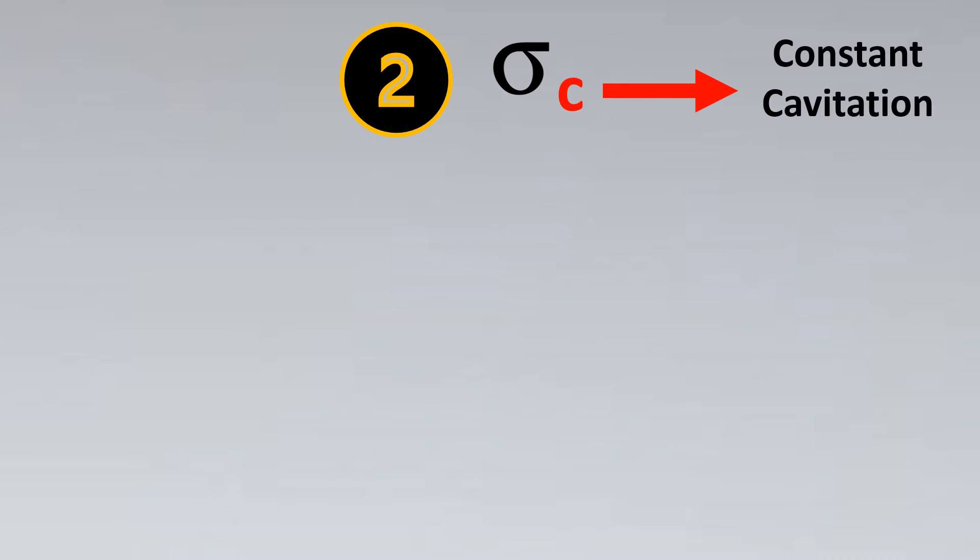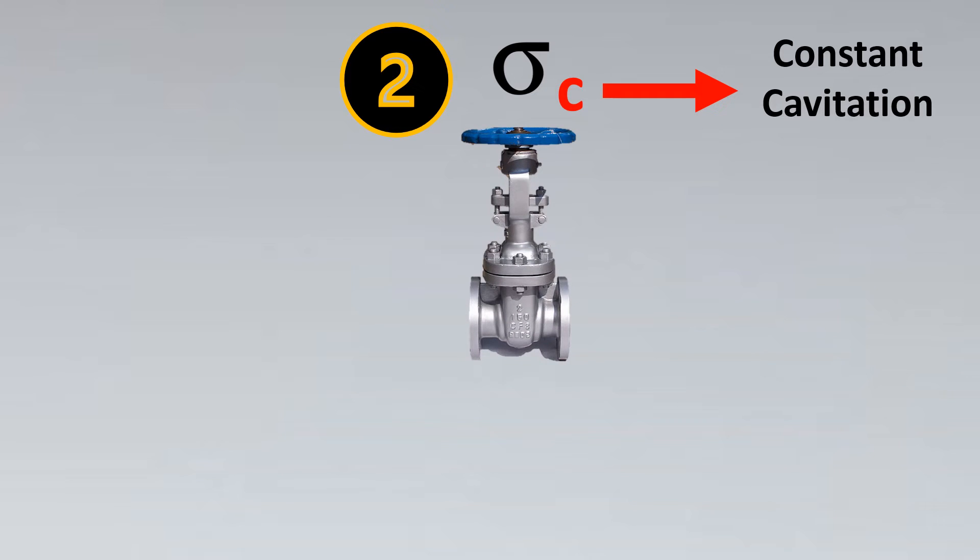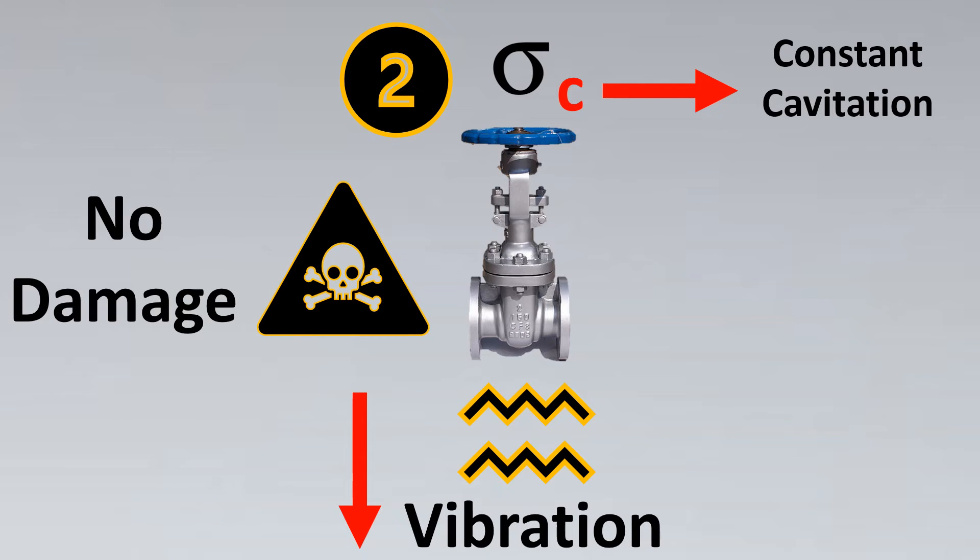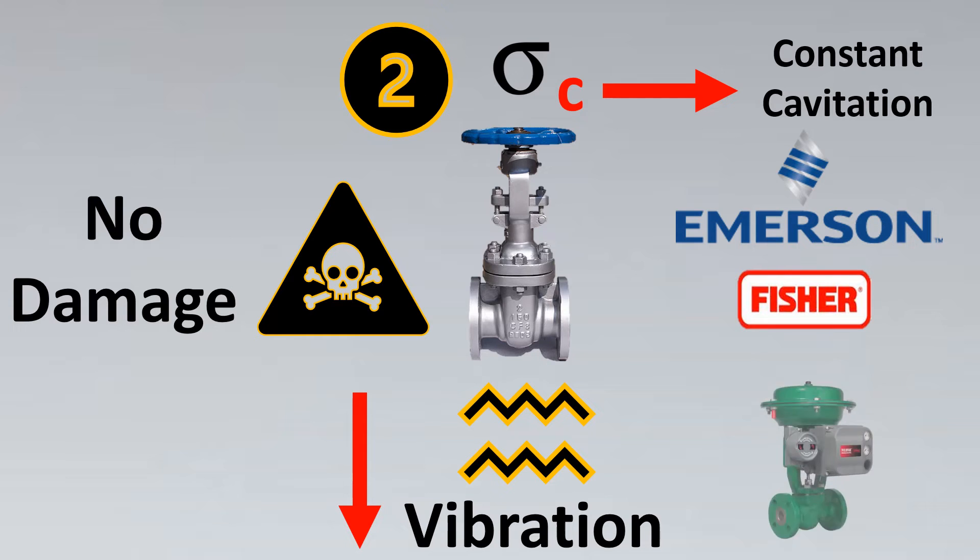What if we have the second level, which is called IC with the suffix C, which stands for constant cavitation? Here there is vibration happening in the valve, there is cavitation happening in the valve, but the vibration is low - it is not that harmful or that it can damage the valve. We'll also see a practical example from Emerson Fisher at the end of the video as to how we can implement this in actual physical projects.